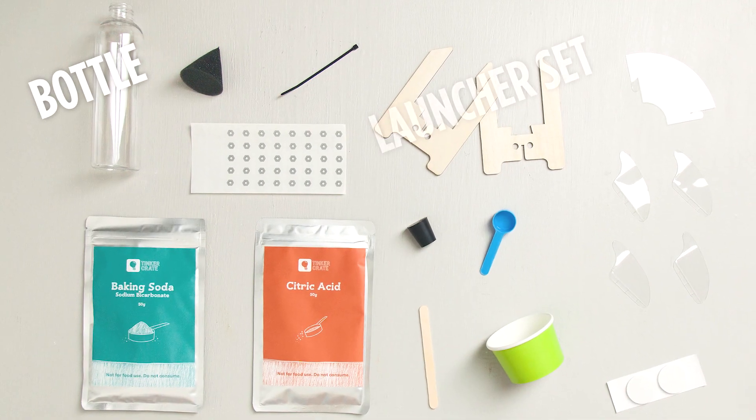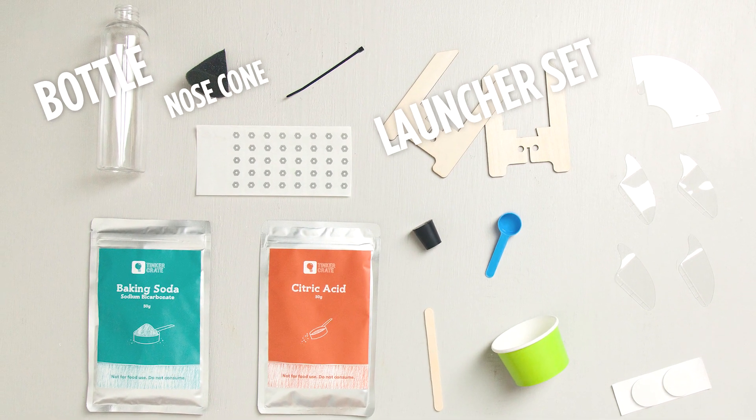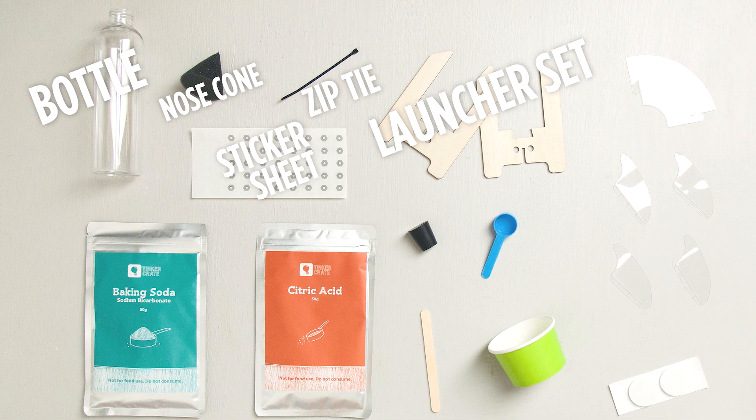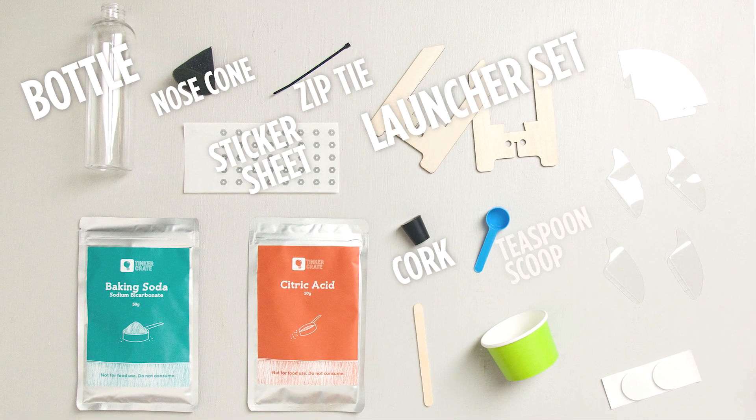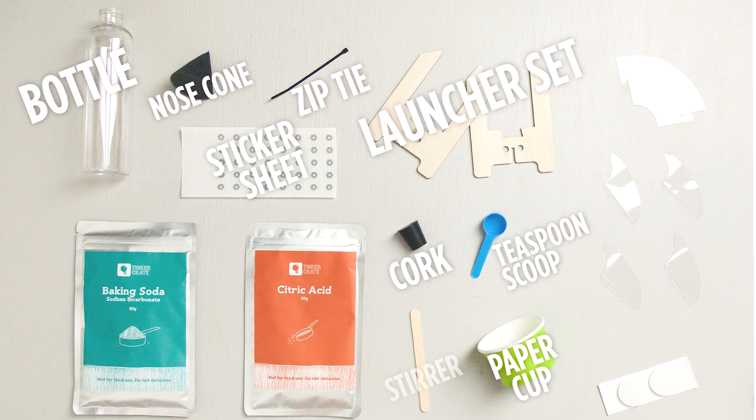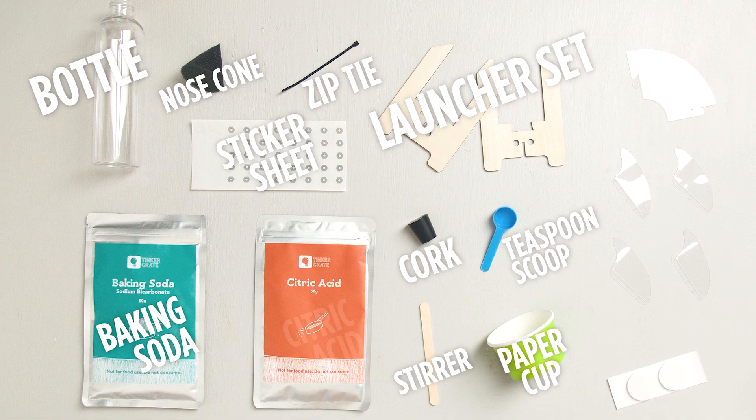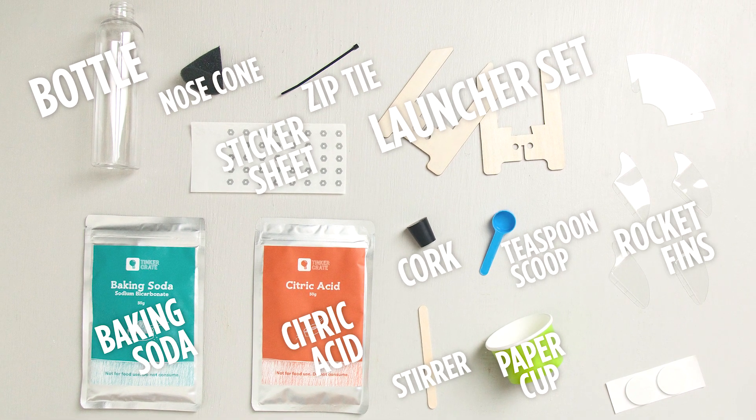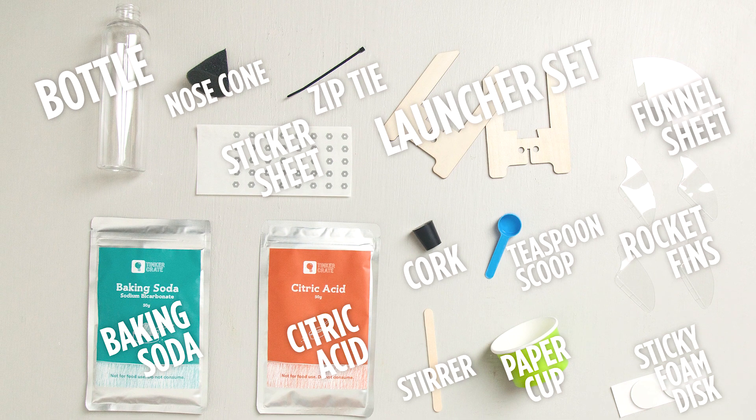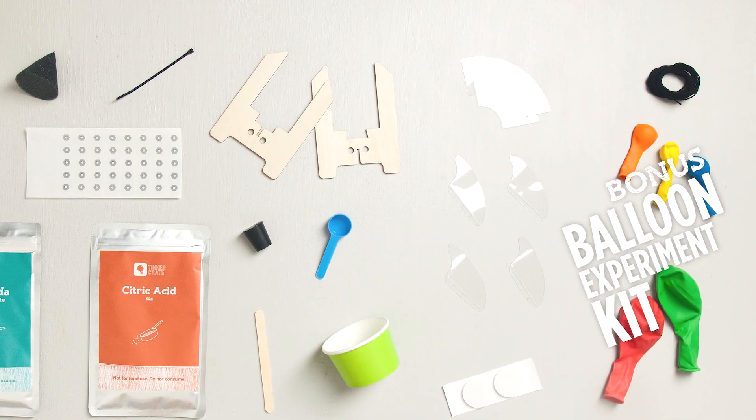In this crate you'll get a bottle, a wooden launcher set, a foam nose cone, a zip tie, a sticker sheet, rubber cork, a teaspoon scoop, a paper cup, a stirrer, baking soda, citric acid, rocket fins, a funnel sheet, two sticky foam discs, and a bonus balloon experiment.